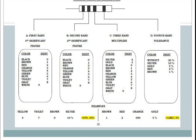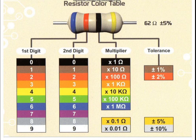For example, if the first band is yellow that is four, the second band is violet that is seven, and the third band is brown — meaning multiply by ten. So we get 47 × 10 = 470. The fourth band is silver, meaning a tolerance of ten percent. So the total value is 470 ohms ± 10%.